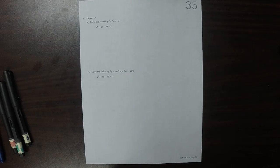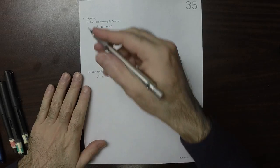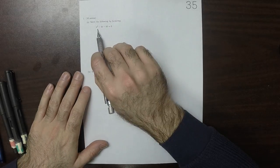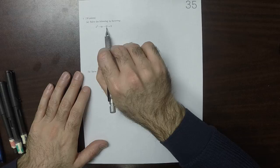This is the solution to Written Homework 35. So by factoring, we want to find two numbers whose product is negative 45